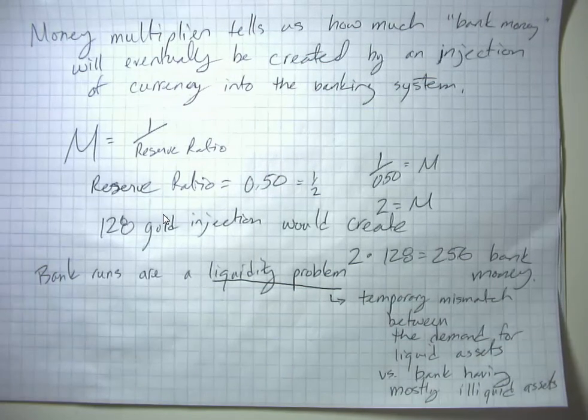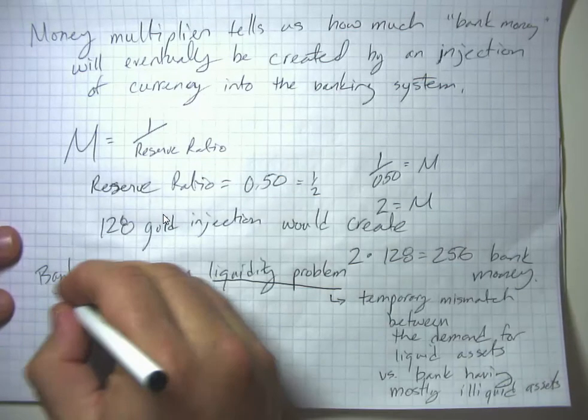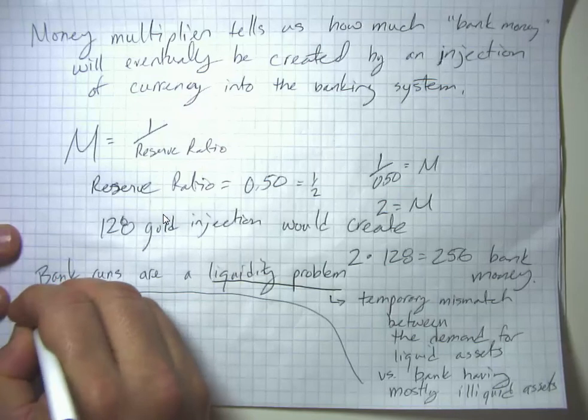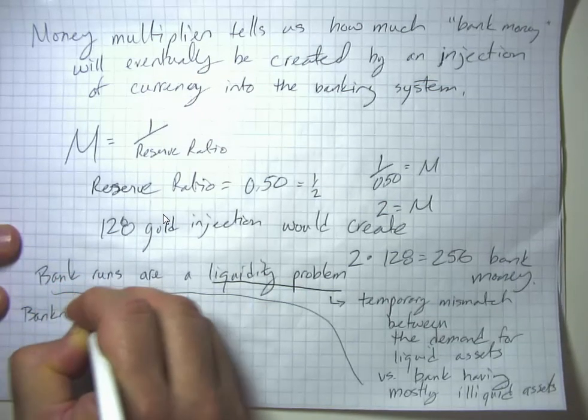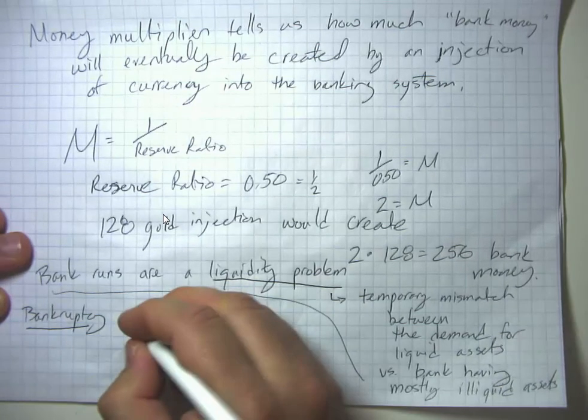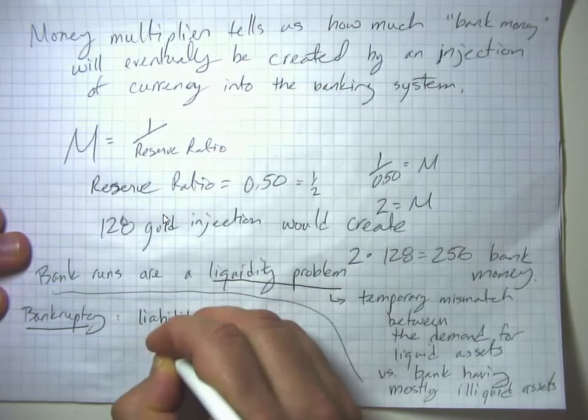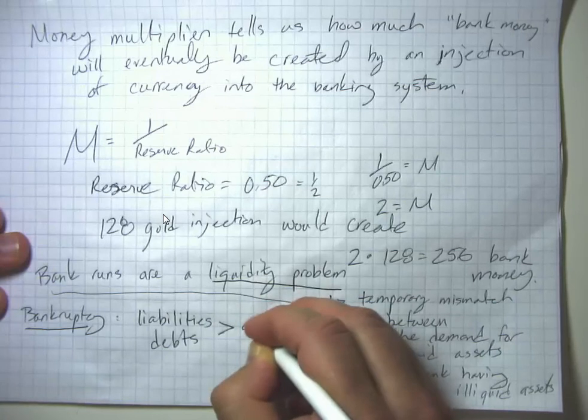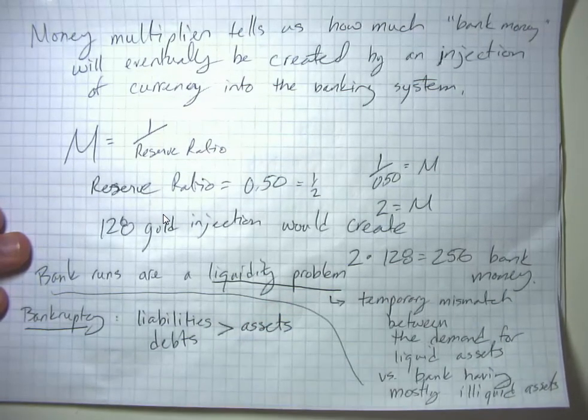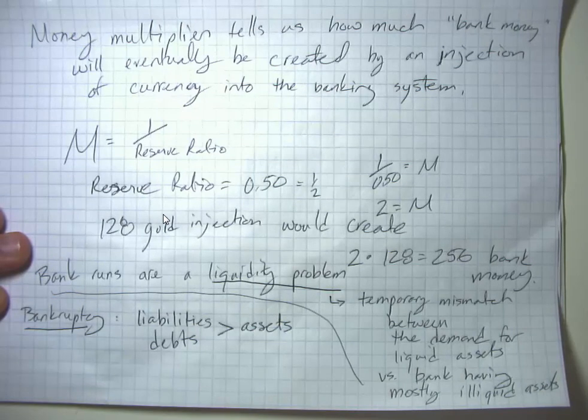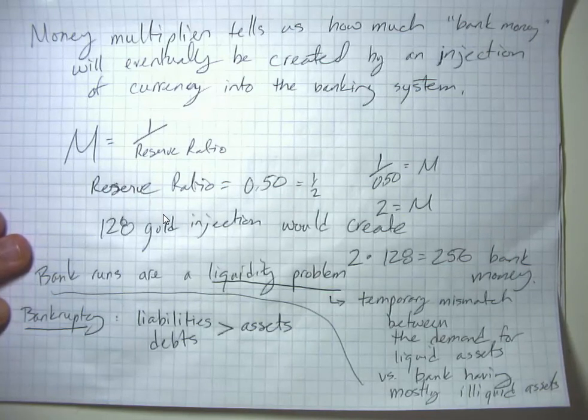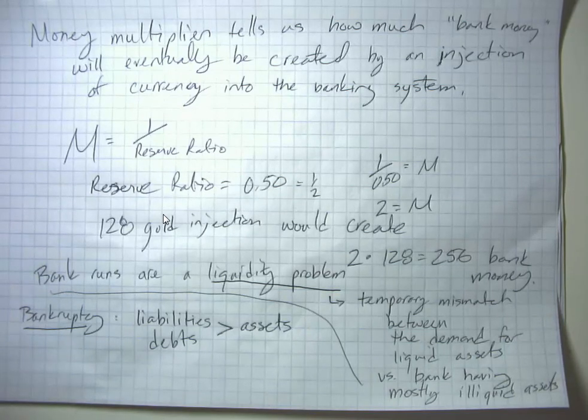If the bank is given enough time for all those loans to be repaid, it will be able to be repaid. This is in contrast to a true bankruptcy. Bankruptcy is a situation where the bank's liabilities, its debts, are greater than its assets. If the bank owes more to its depositors than it's going to be repaid on its loans, even if it's having enough time for all those loans to come back, then we have a real problem.